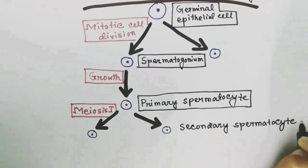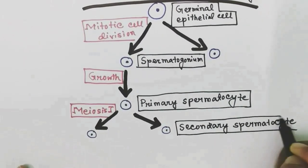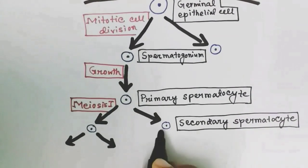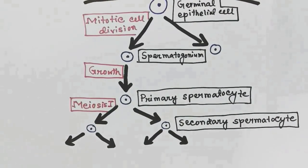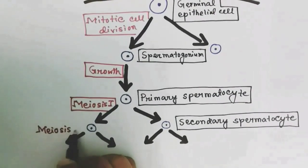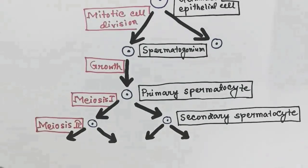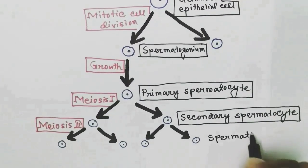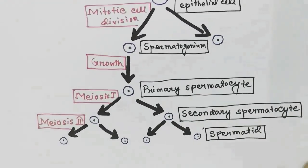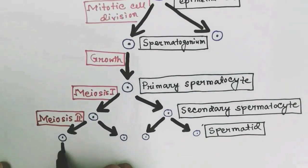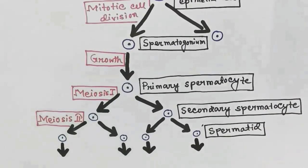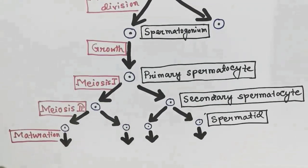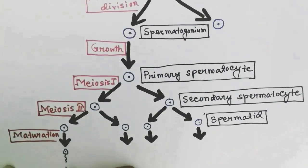After production of the secondary spermatocyte, meiosis II occurs. After meiosis II cell division, the secondary spermatocyte gives rise to another cell called a spermatid. These spermatids then undergo spermiogenesis — the maturation of spermatids — to form sperms or spermatozoa.